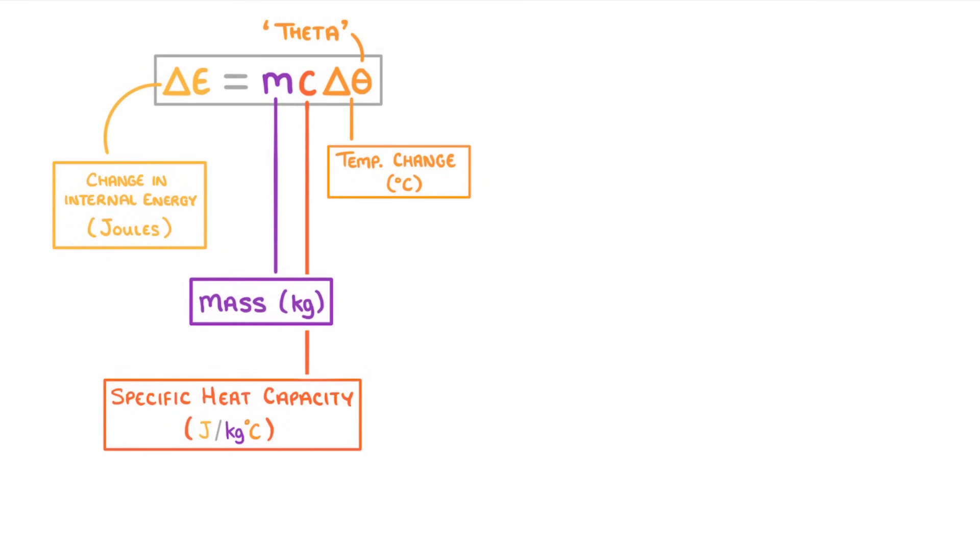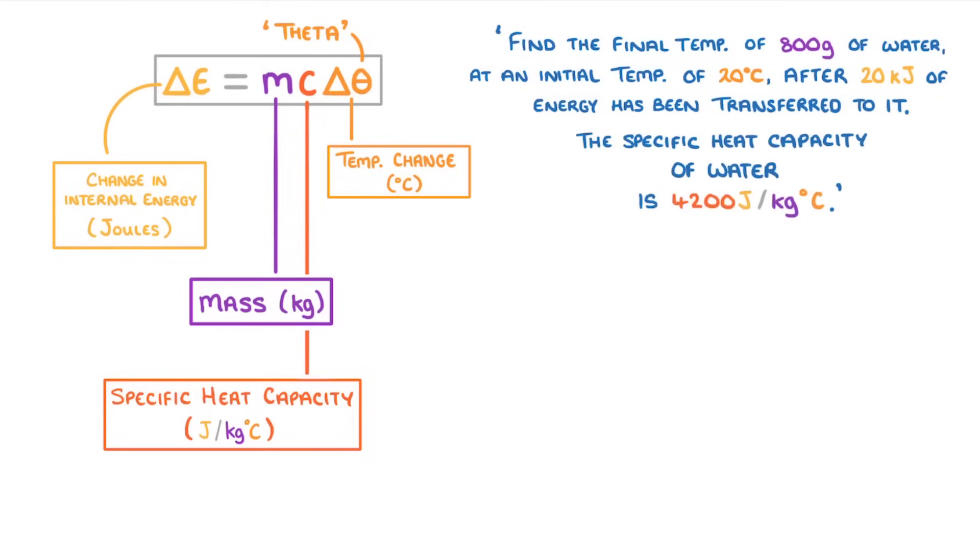To see how this works, let's try a question. Find the final temperature of 800 grams of water at an initial temperature of 20 degrees Celsius after 20 kilojoules of energy has been transferred to it. The specific heat capacity of water is 4200 joules per kilo per degree.